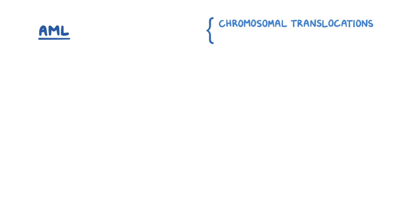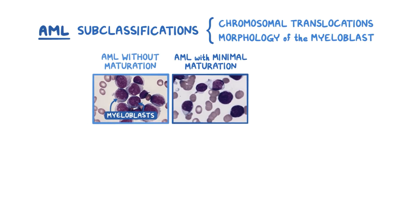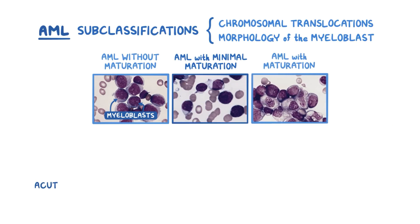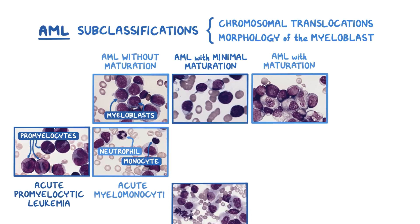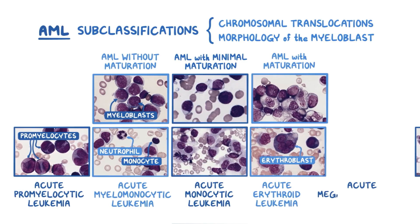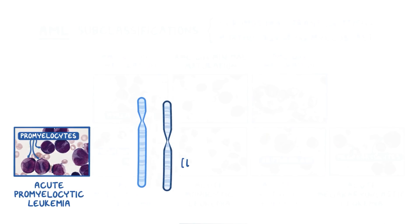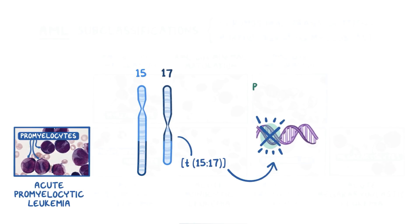AML is caused by a wide variety of abnormalities, like chromosomal translocations, which are used to subclassify AML into a few different types. AML can be classified based on the morphology of the myeloblast into AML without maturation, AML with minimal maturation, AML with maturation, acute promyelocytic leukemia, acute myelomonocytic leukemia, acute monocytic leukemia, acute erythroid leukemia, and acute megakaryoblastic leukemia. Of these, acute promyelocytic leukemia is an important subtype, characterized by translocation of chromosomes 15 and 17, which disrupts the retinoic acid receptor alpha gene, which is required for normal cell division.